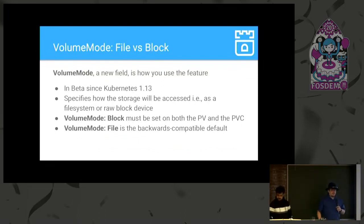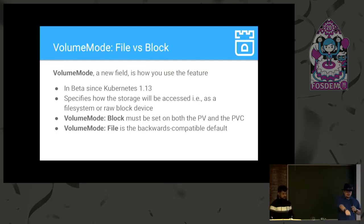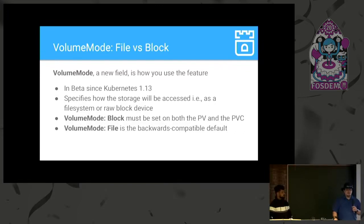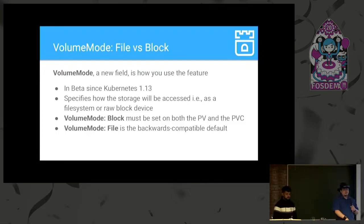The interface implemented for this is called the volume mode, a new field in both PVCs and PVs. It takes one of two values: 'file', which is the backwards-compatible default, or 'block', which activates the new feature. This field must match in both the PVC and the PV — similar to any other required field in a PVC that must match a given PV to bind to it.